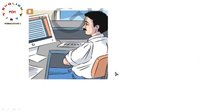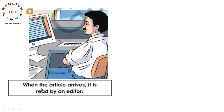الصورة الثالثة: when the article arrives - هذه active لأن فيها فاعل وفعل. it is read by an editor - مبني للمجهول. نقول read بصيغة التصريف الثالث لأن read هنا ليست infinitive. يعني يقرأه المصحح أو رئيس التحرير. it تعود على article.